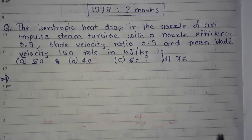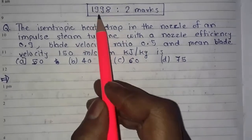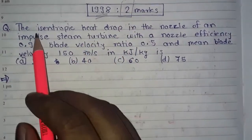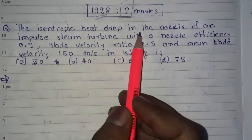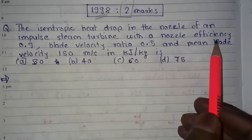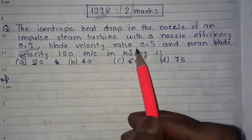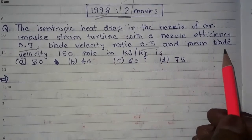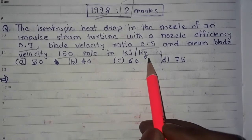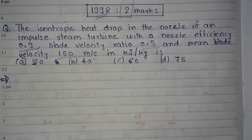Hello friends, welcome. This is a question from the 1998 question paper and it was for two marks. The question is: the isentropic heat drop in the nozzle of an impulse steam turbine with a nozzle efficiency 0.9, blade velocity ratio 0.5, and mean blade velocity 150 meter per second in kilojoule per kg is — these are the options.